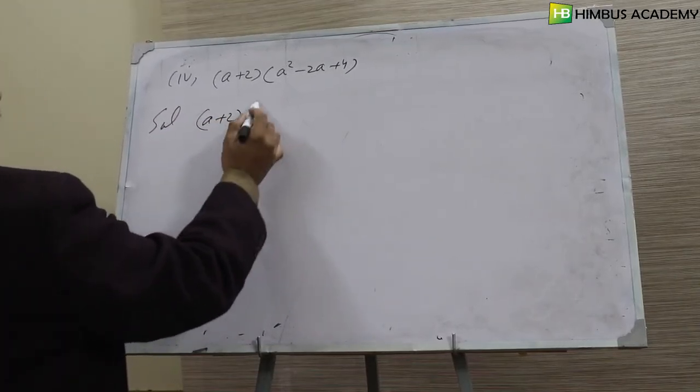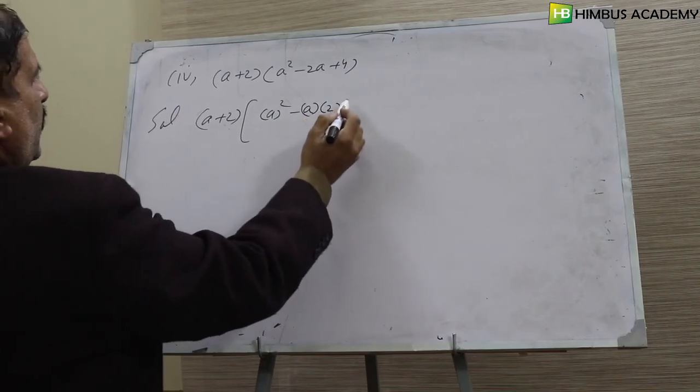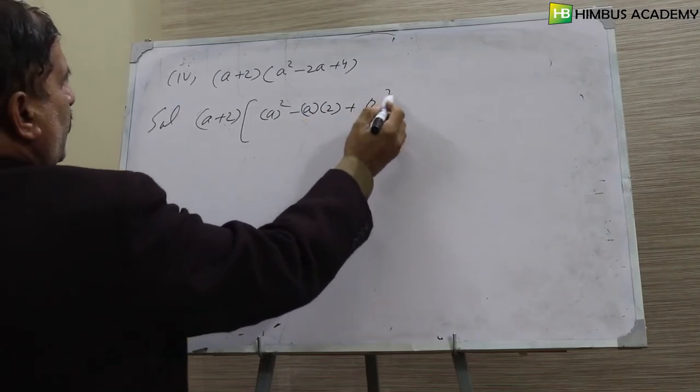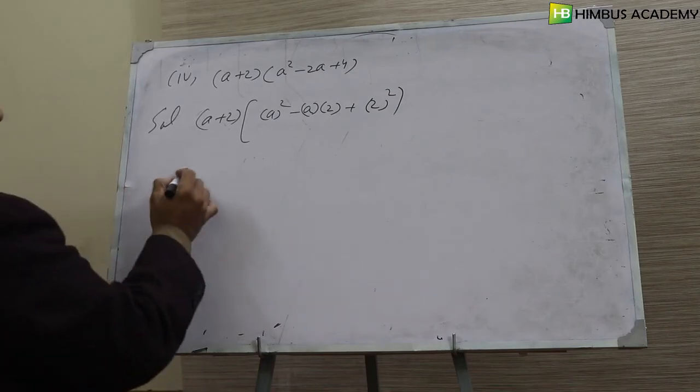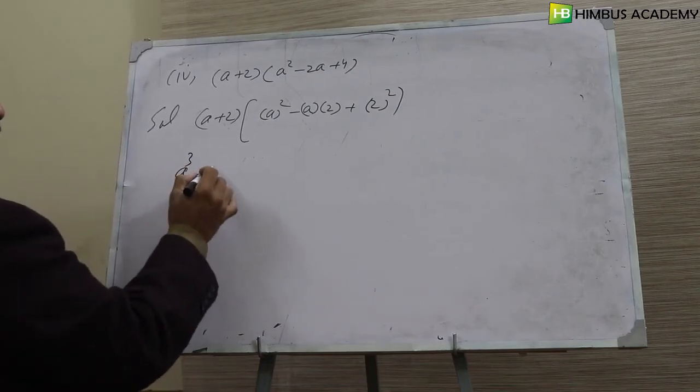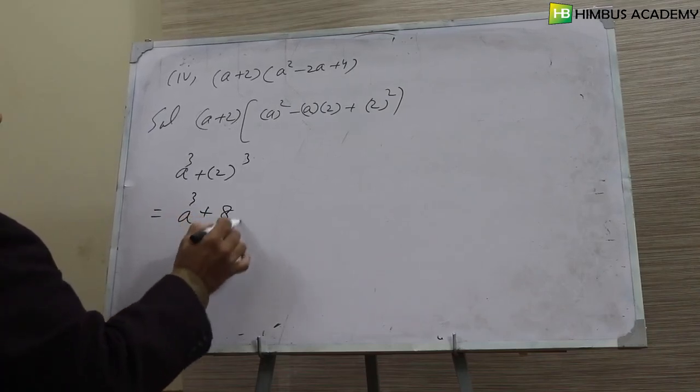This is A plus B, A square minus AB plus B square. Applying the formula, this becomes A cube plus B cube, which is A cube plus 8. This is our answer.